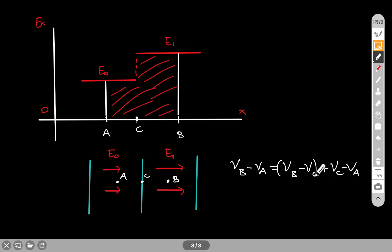Because VB minus VC is the negative area under the graph from C to B, and here the electric field is constant, so you can easily calculate that. VC minus VA is an area where the electric field is constant, so that is a simple area to calculate.